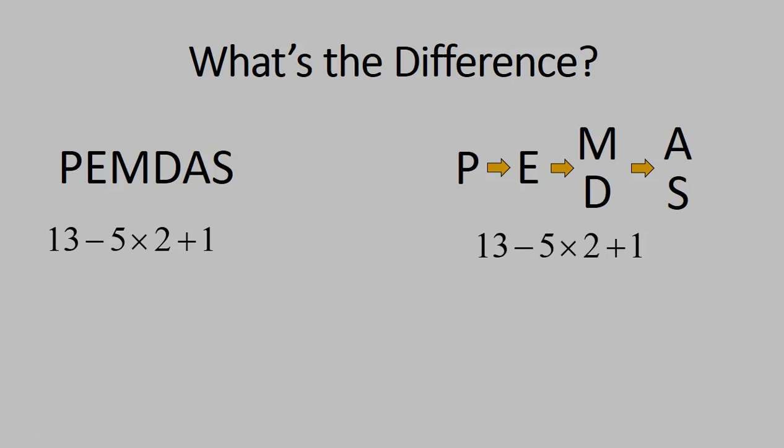I'm going to do the same exact question on the left and on the right. On the left, let's start off there. 13 minus 5 times 2 plus 1. There are no parentheses. There are no exponents. So we move on to our multiplication. 5 times 2. 5 times 2 is 10. Perfect.